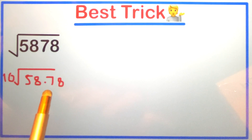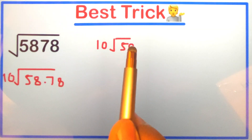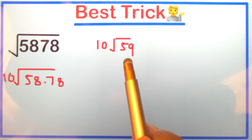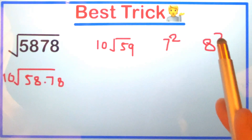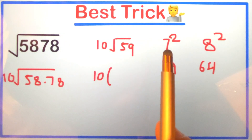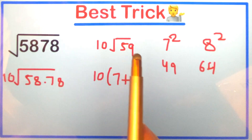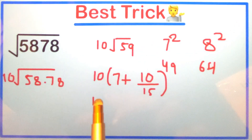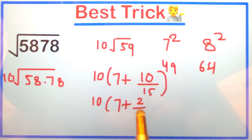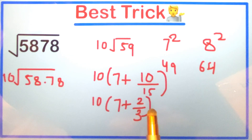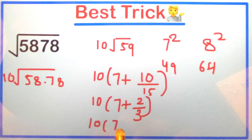We approximate 58.78 to 59, so we have 10 × √59. Now 59 comes between 7² and 8², because 7² is 49 and 8² is 64. We write 10, then the lower number 7, then plus the difference: 59 minus 49 is 10, divided by 64 minus 49 which is 15. Dividing both by 5 gives 2/3, which equals 0.667.